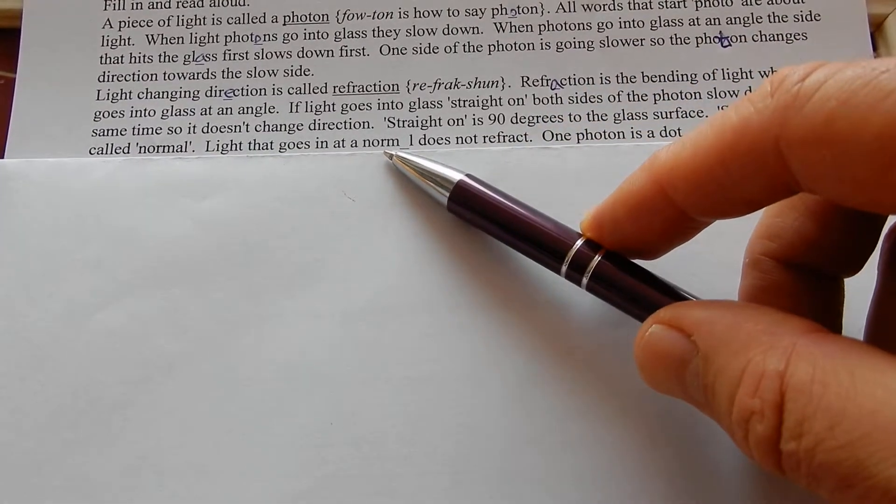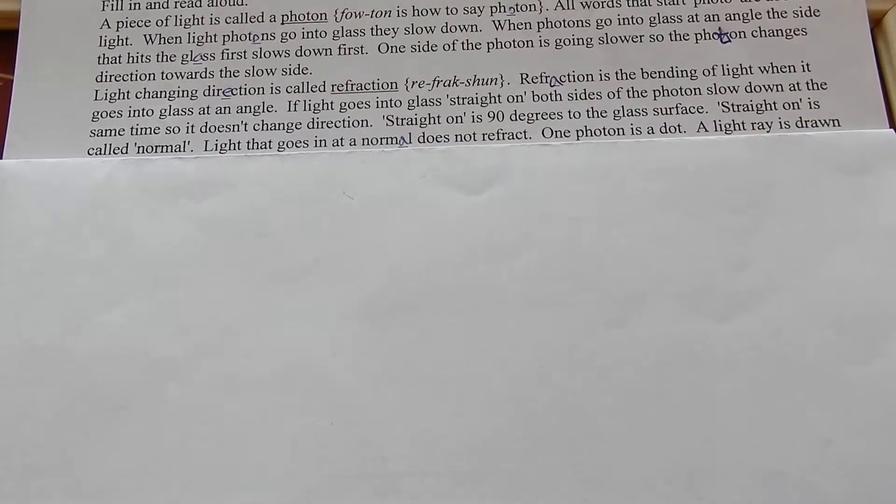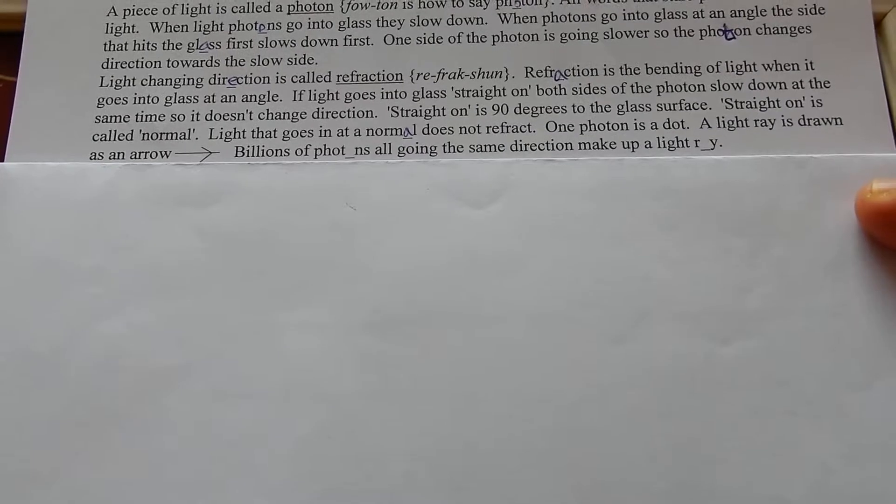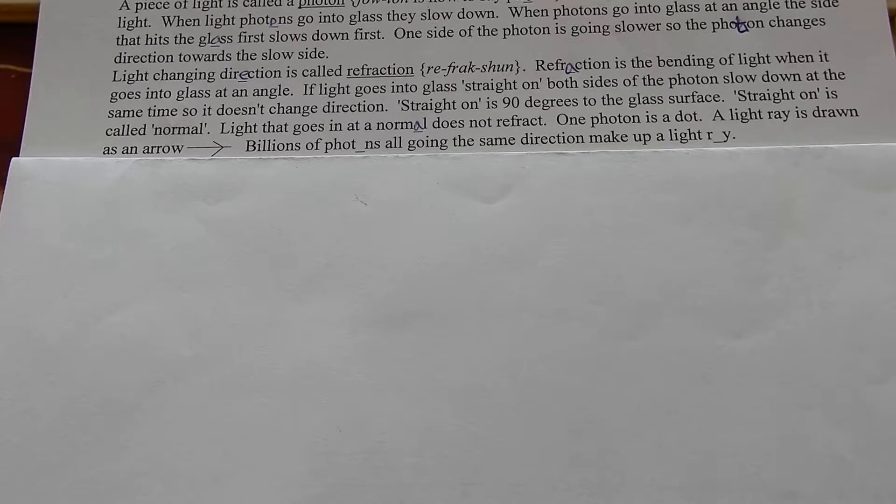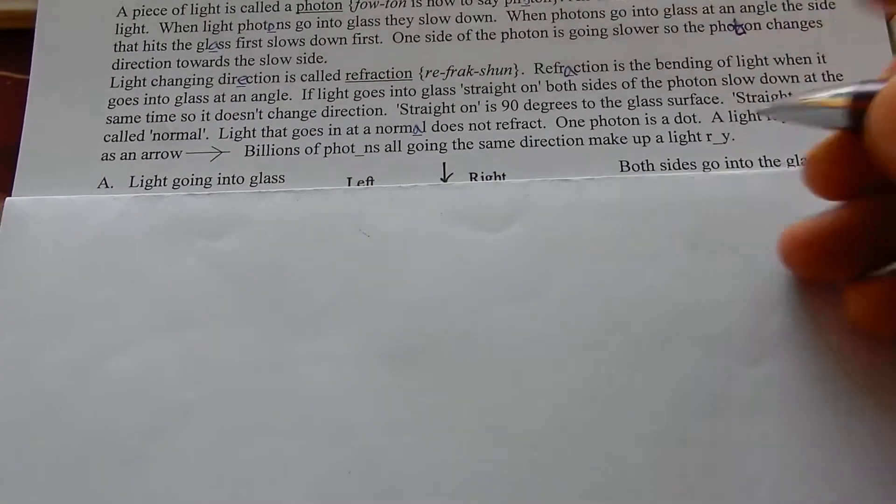One photon is a dot, well a moving dot. A light ray is drawn as an arrow. Billions of photons all going the same direction make up a light ray.